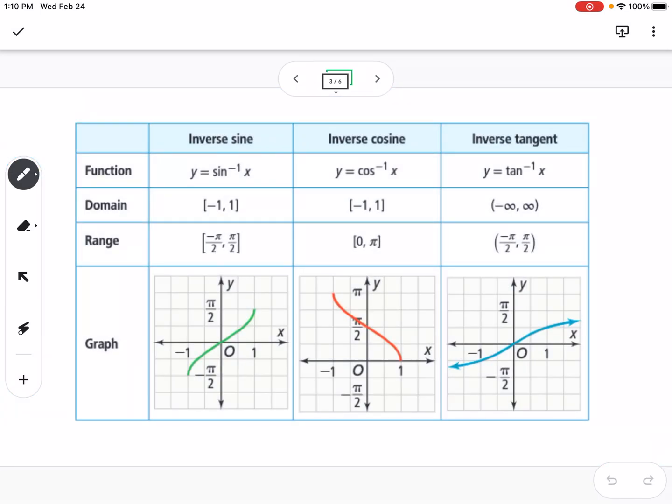So you can see that sine is between negative pi over 2 and pi over 2. So if you're thinking of the unit circle, it's going to be the right half of the unit circle. Cosine is between 0 and pi, so that would be the top half of our unit circle, and tangent would be negative pi over 2 to pi over 2, same as sine, which would be the right half of our unit circle.